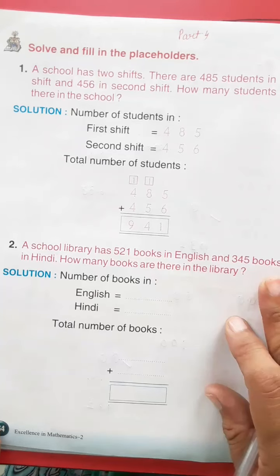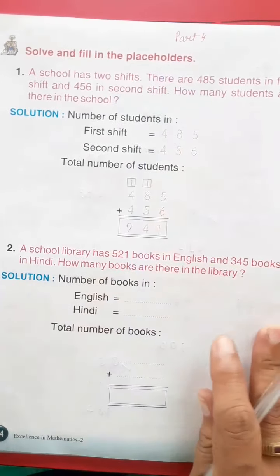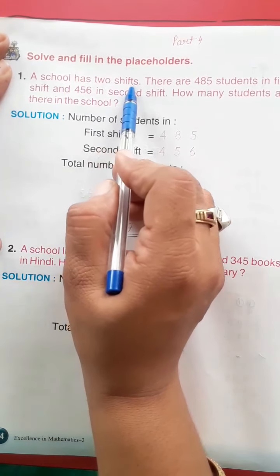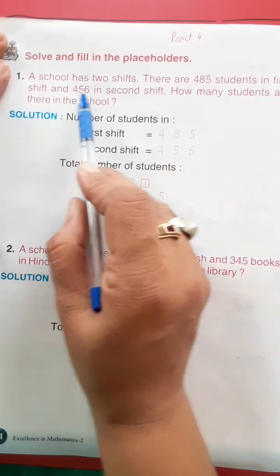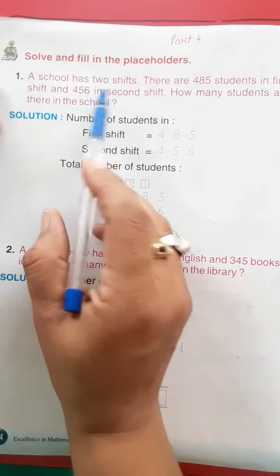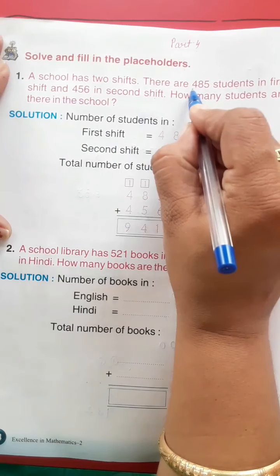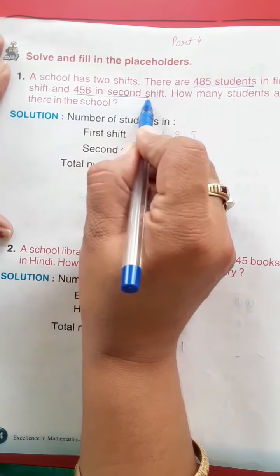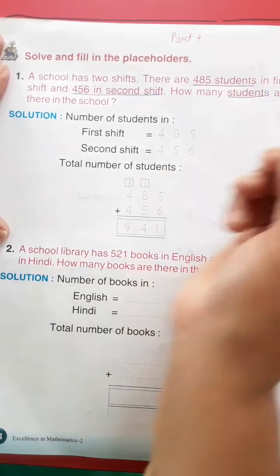Page number 64: solve and fill in the placeholders. This is like word problems. A school has two shifts. There are 485 students in first shift and 456 in second shift. How many students are there in the school?